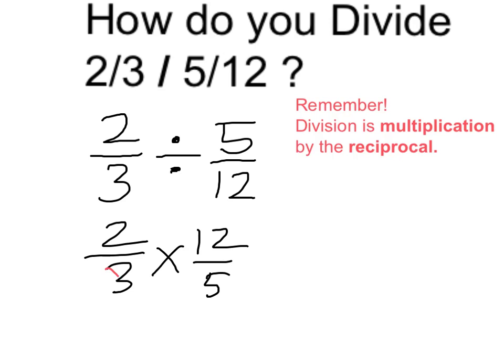Now I can cross-simplify between the 3 and the 12. That reduces to 1 and a 4. 3 goes into itself once, into 12 four times.